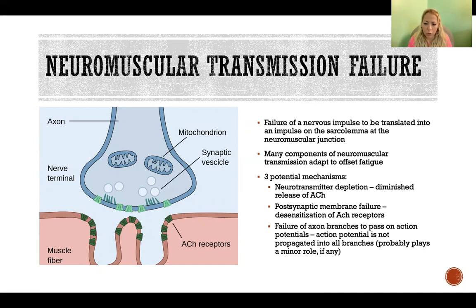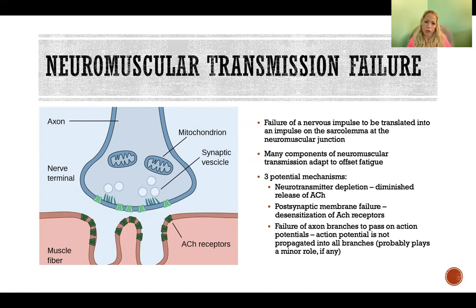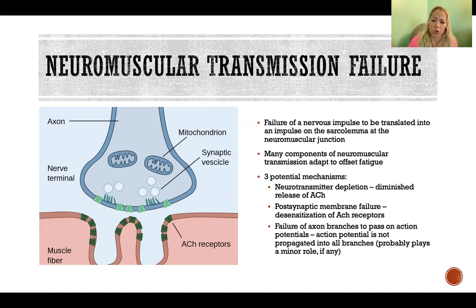Post-synaptic membrane failure is another possibility — the acetylcholine receptors on the motor end plate of the sarcolemma become desensitized to the acetylcholine being released from the motor neuron. Finally, the least likely scenario is failure of axon branches to pass on action potentials, where the action potential is not propagated into all smaller branches reaching out to the muscle fiber. It probably plays a small role, if any. It's more likely — and better demonstrated — that depletion of acetylcholine and/or desensitization of acetylcholine receptors are the primary mechanisms.